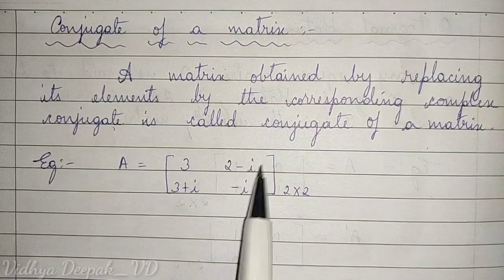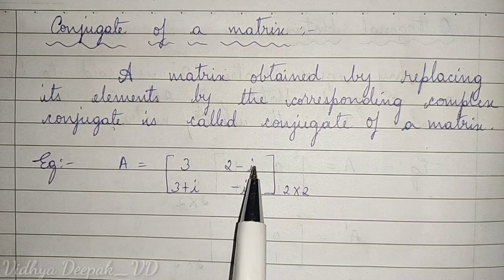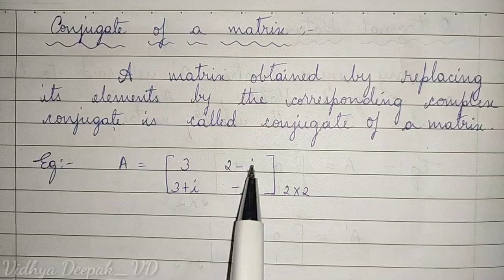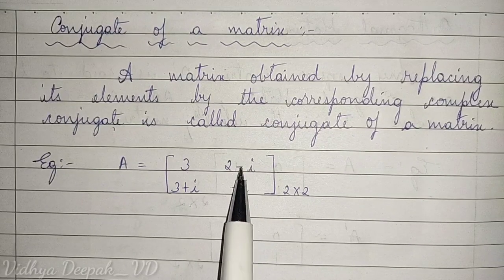You have elements of A to be complex numbers, that is it has real and imaginary parts with i. If I change the sign of i, this becomes conjugate of this complex number.